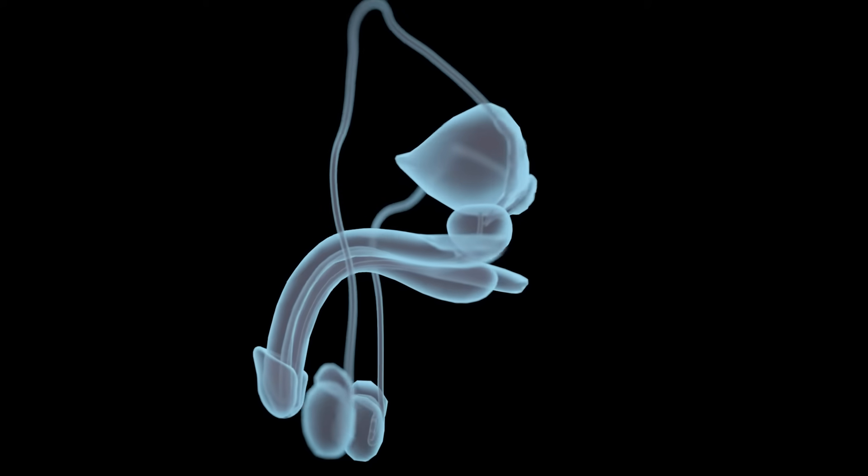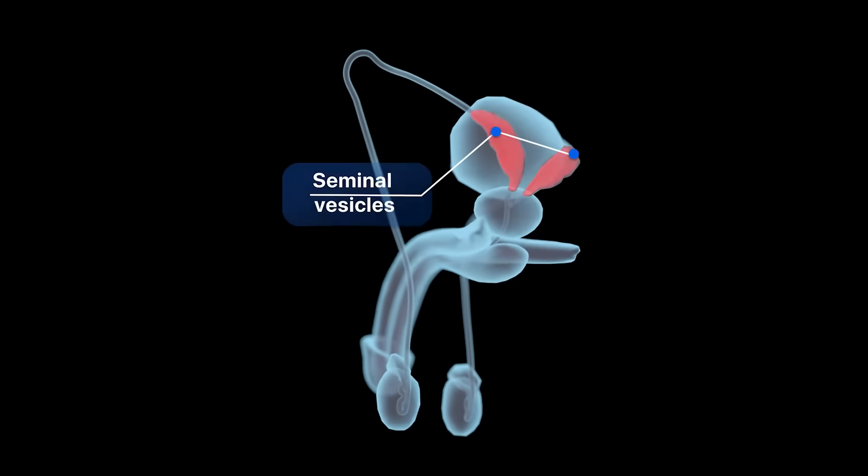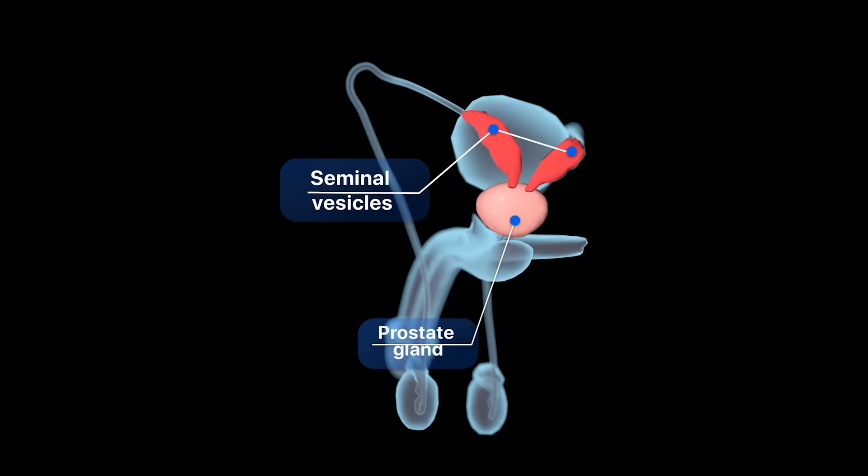During ejaculation each vas deferens propels sperm through the seminal vesicles and the prostate gland.